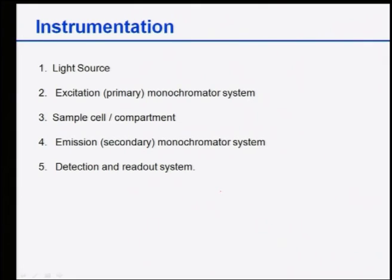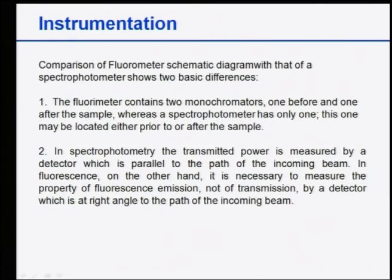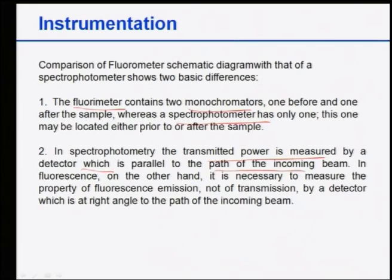For instrumentation in photoluminescence spectroscopy, five components are needed: a light source, excitation monochromatic system, sample cell compartment, emission monochromator, and detecting system. A fluorometer contains two monochromators — one before and one after the sample (one for absorption, one for fluorescence) — unlike a spectrophotometer which has only one. In a spectrophotometer, transmitted power is measured by a detector parallel to the incoming beam, whereas in a fluorometer, the fluorescence emission is measured at a right angle to the incident beam.